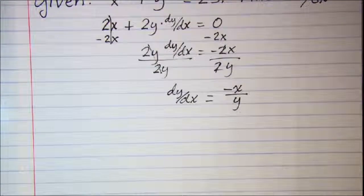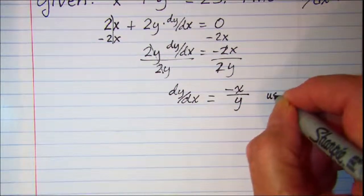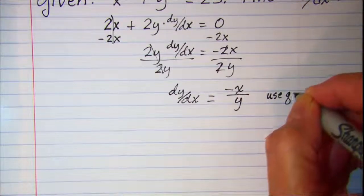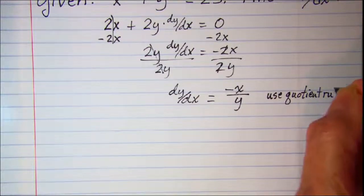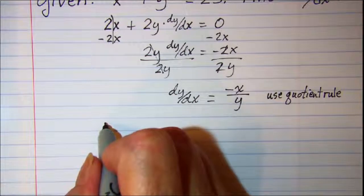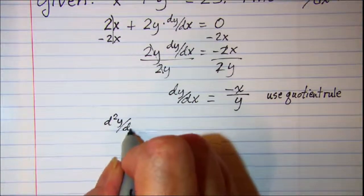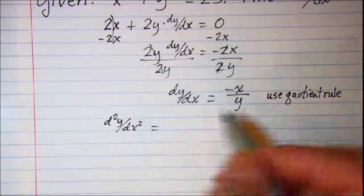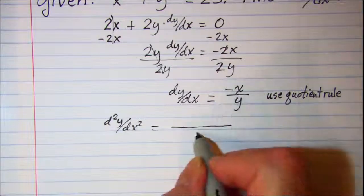Now for our second derivative we'll need to use the quotient rule on our first derivative. So our second derivative is equal to, and our bottom is the square of this denominator.